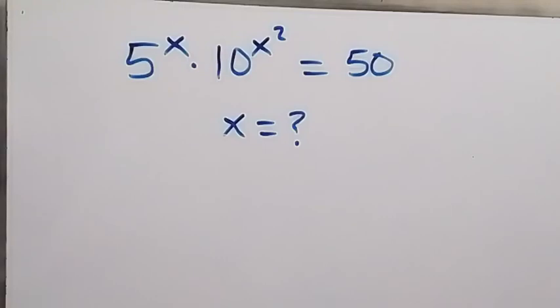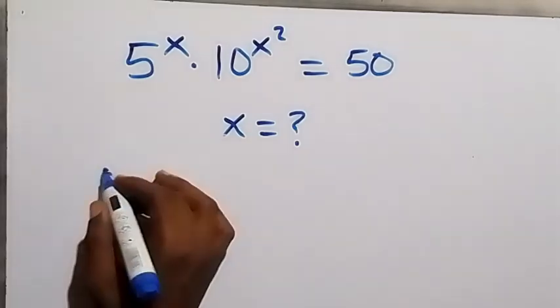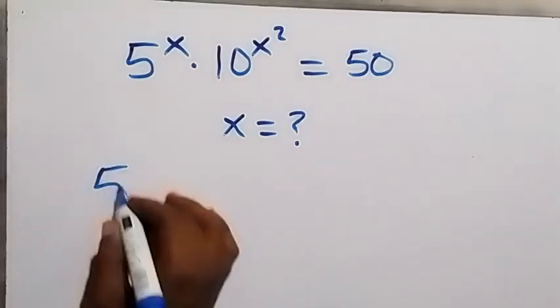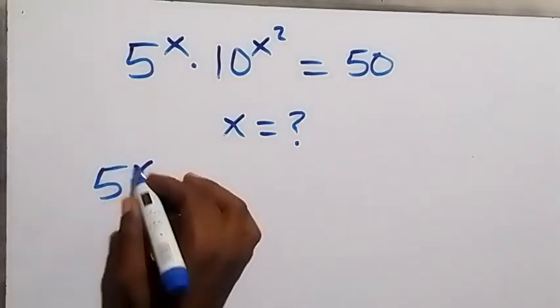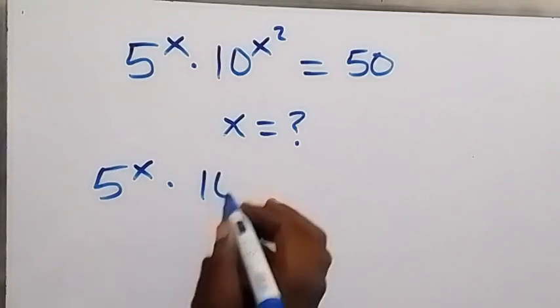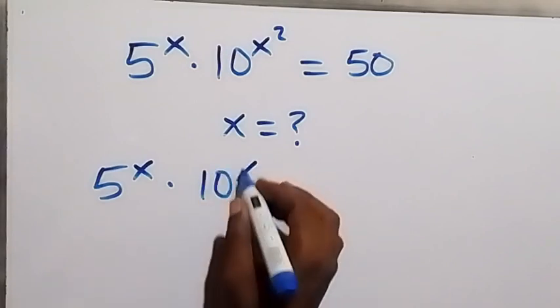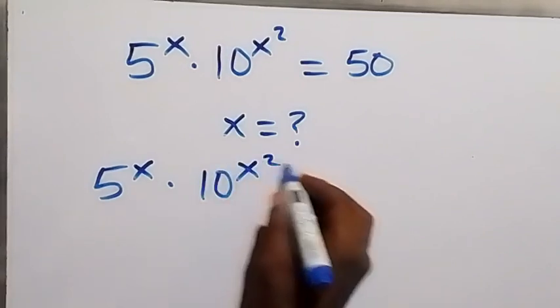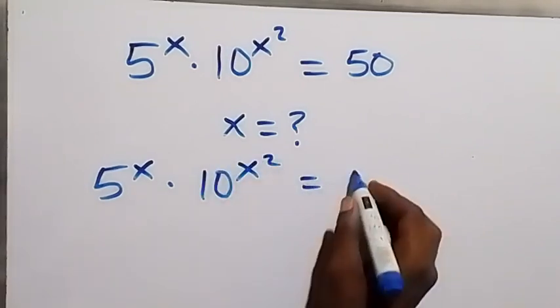Hello, you are welcome. We are going to solve this nice algebra equation. We are given 5 raised to power x, multiplied by 10 raised to power x squared, equals 50.